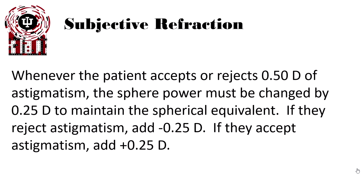During subjective refraction, whenever the patient accepts or rejects a half diopter of astigmatism, the sphere power must be changed by 0.25 diopters to maintain the spherical equivalent. If they reject astigmatism, add 0.25 diopters. If they accept astigmatism, add 0.25 diopters.